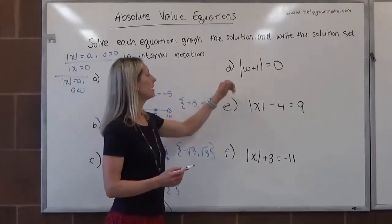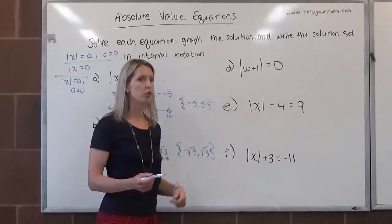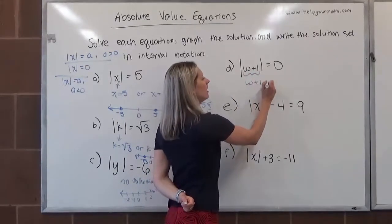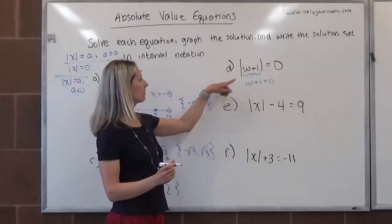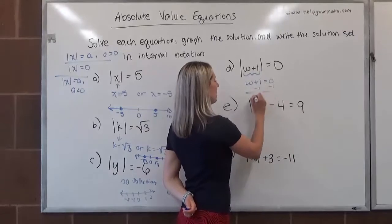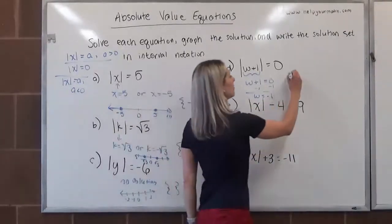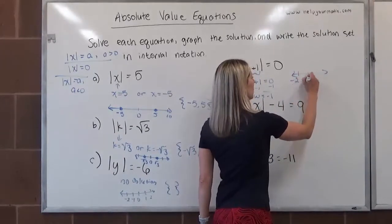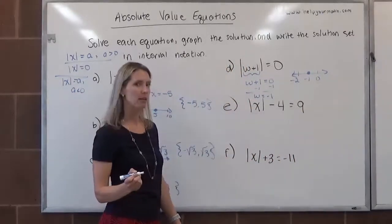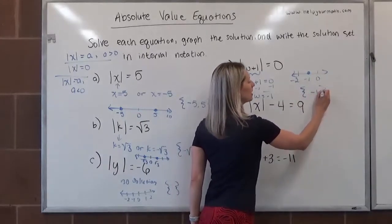Looking at letter D, we have the absolute value of something equal to 0. In this case, there's one solution and only one solution: when what's inside the absolute value, w plus 1, equals 0 itself. We do have a little bit of work — we need to get w by itself, so we subtract 1 from both sides, and we get w equals negative 1. On a number line, we would just put a point over negative 1. In interval notation, we open up a set of braces and put negative 1 inside.